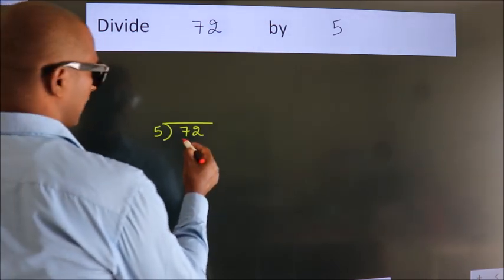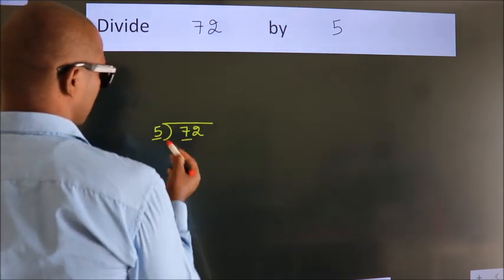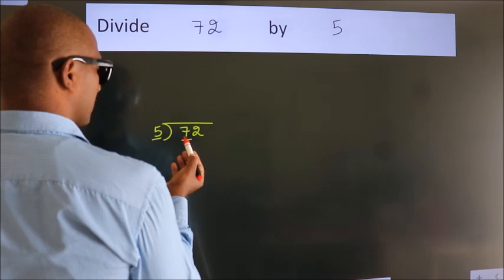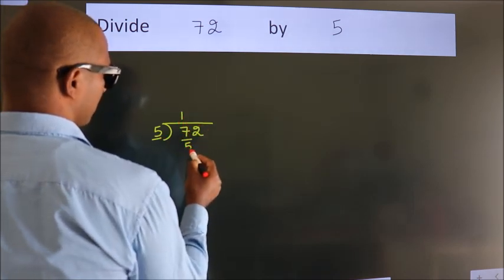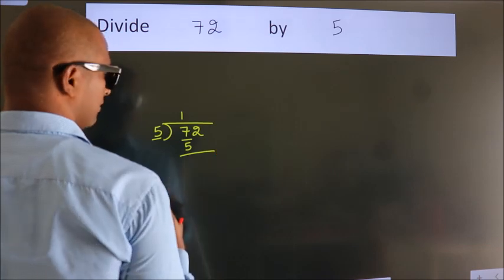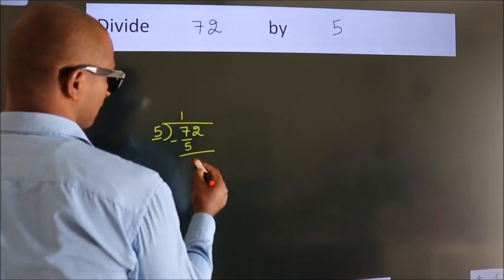here we have 7, here 5. A number close to 7 in 5 table is 5 once 5. Now, we should subtract. We get 2.